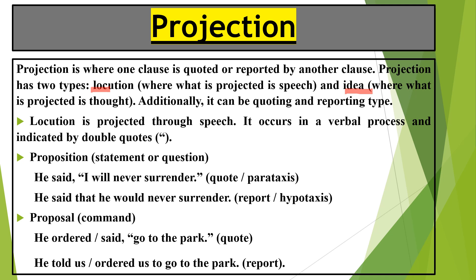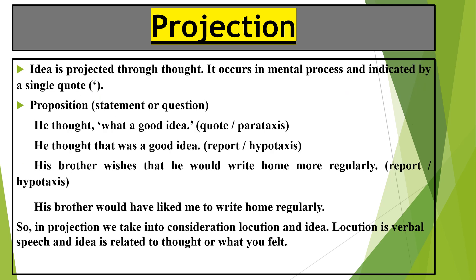Locution is projected through speech. It occurs in verbal process and is indicated by double quotes. Example — statement: 'He said, "I will never surrender."' This is parataxis. 'He said that he would never surrender.' — this is hypotaxis because we haven't used inverted commas anymore; it becomes reported. Command: 'He said, "Go to the park."' — parataxis. 'He told us to go to the park.' — this becomes hypotaxis.